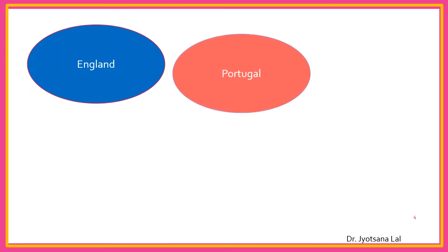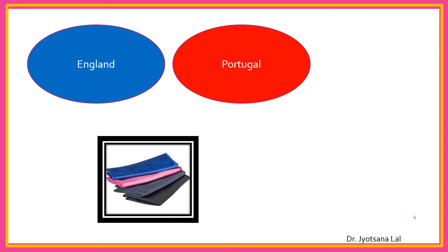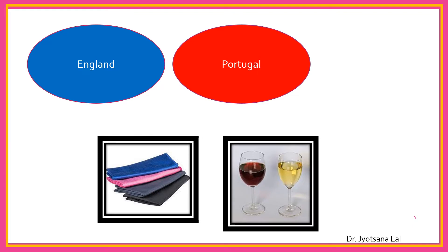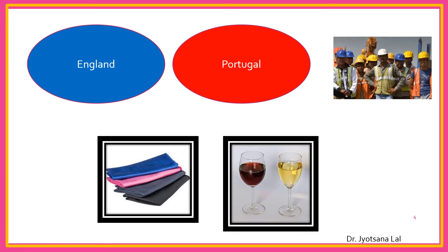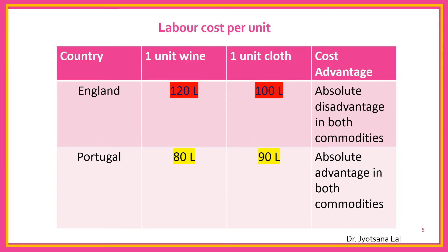Ricardo explained this theory with the help of one example. He has taken two countries — England and Portugal — two commodities — cloth and wine — and one factor of production, that is labor. Now we'll see the cost situation in both the countries. This is labor cost per unit, because here we have assumed that labor is the only cost of production.